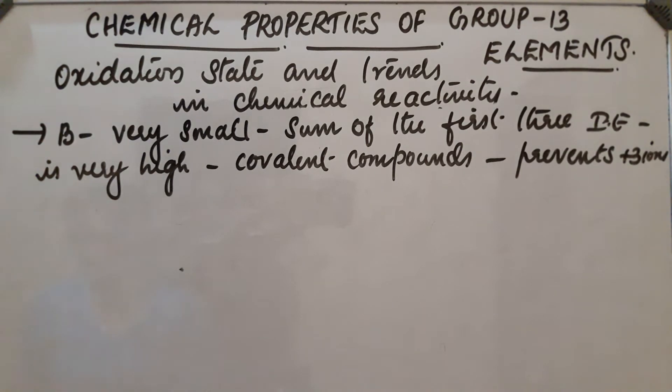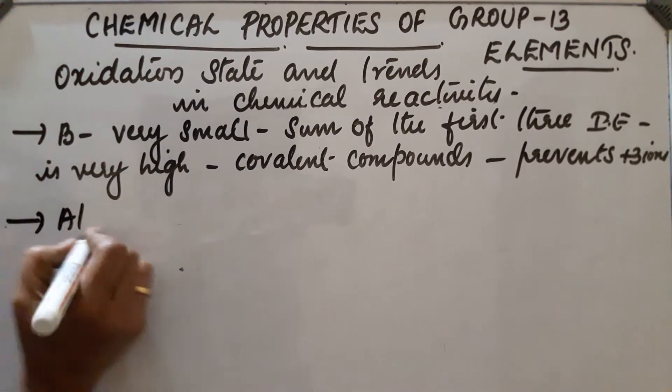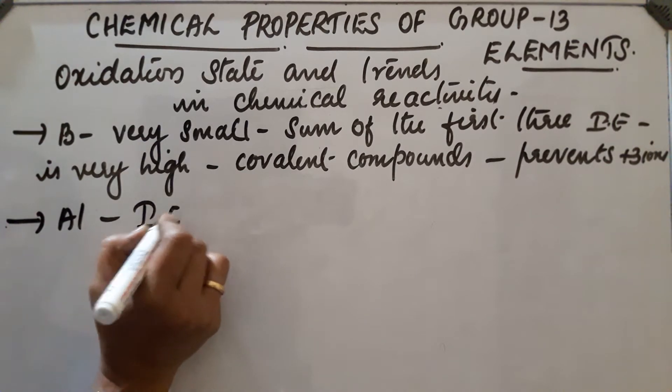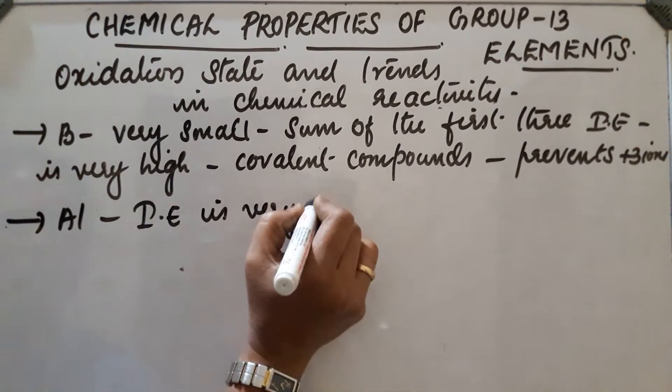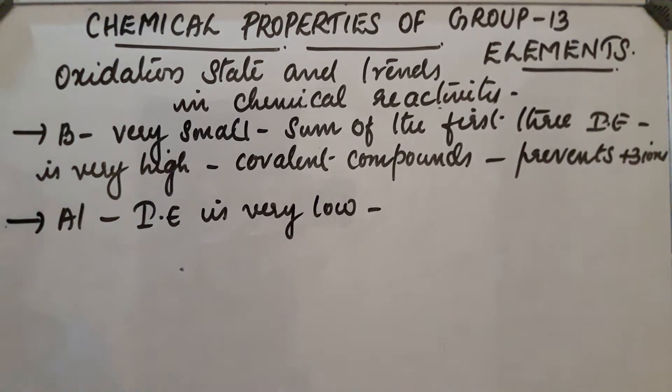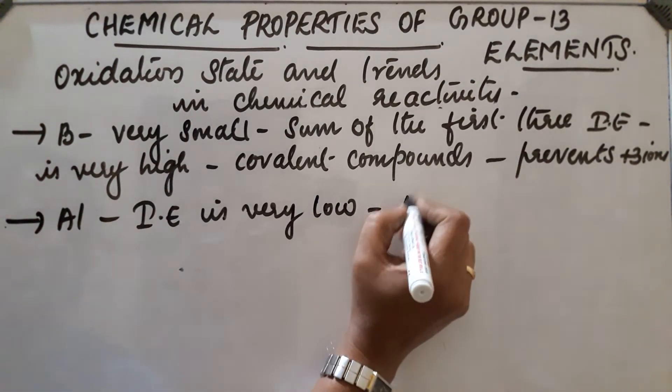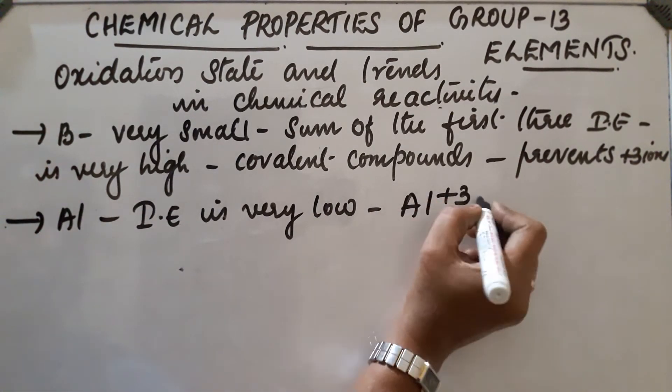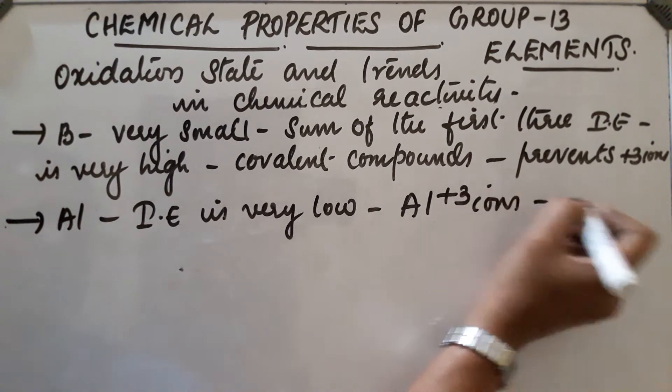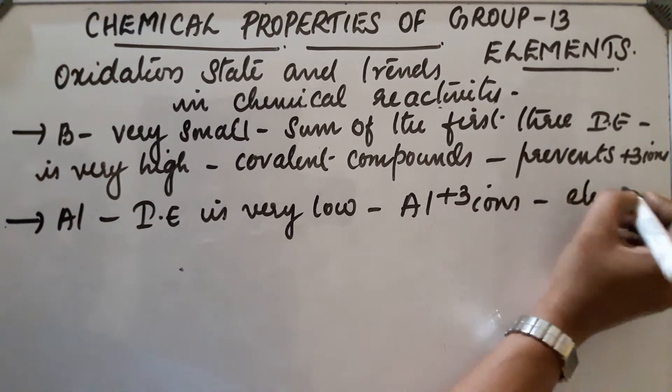Next, down the group, ionization energy decreases. In the case of aluminium, ionization energy is low, so they form Al³⁺ ions and it is a highly electropositive metal.